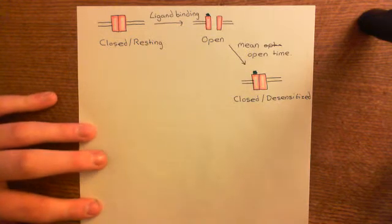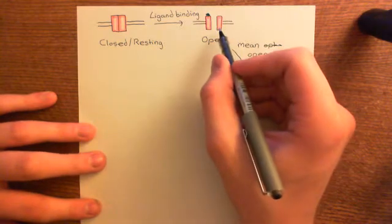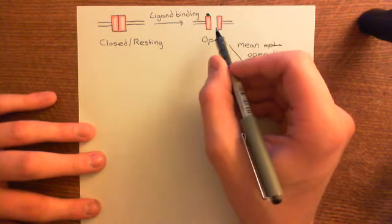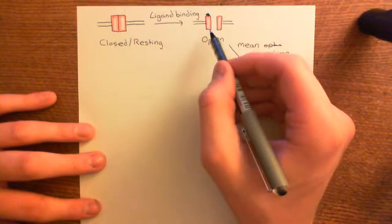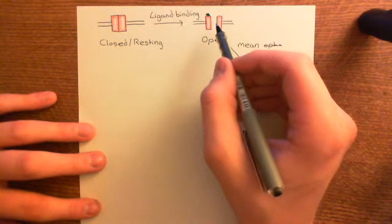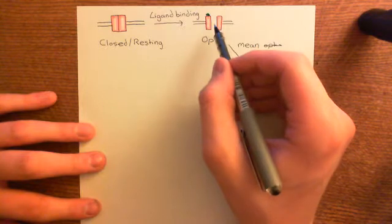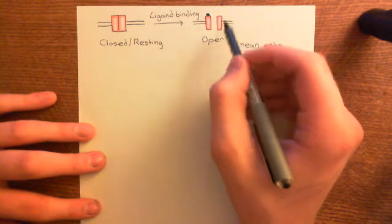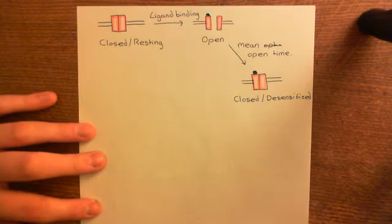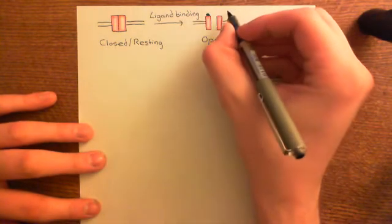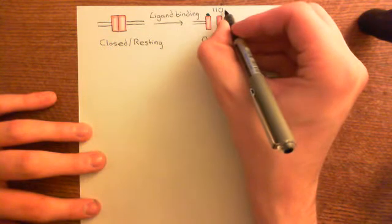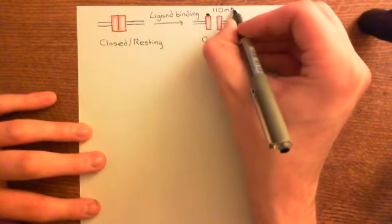Now let's discuss what happens when the receptor is in the open state. The glycine receptor is an anion-selective channel — it allows chloride anions to move through its pore. We need to know which direction they will move when it opens, and for that we need to know two things: the concentration gradient of chloride anions across the membrane, and the electrical potential gradient across the membrane.